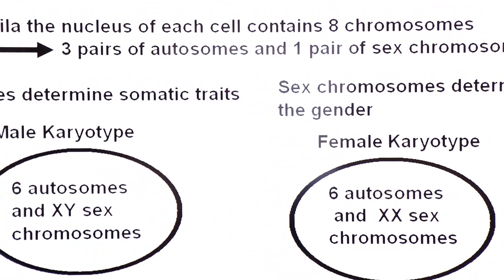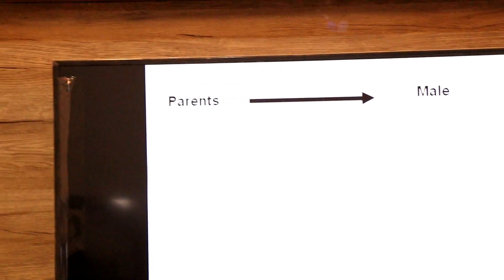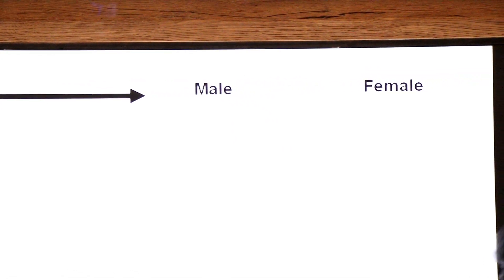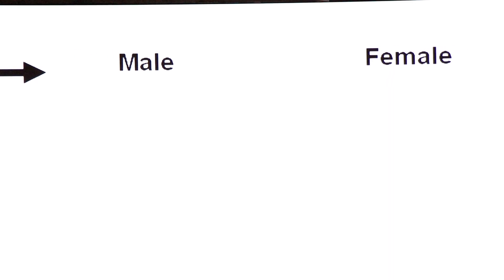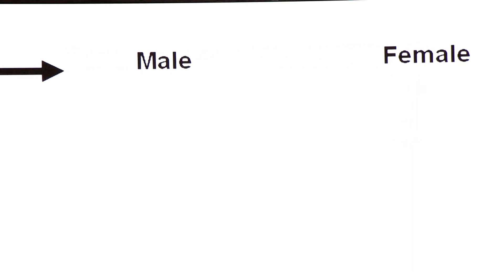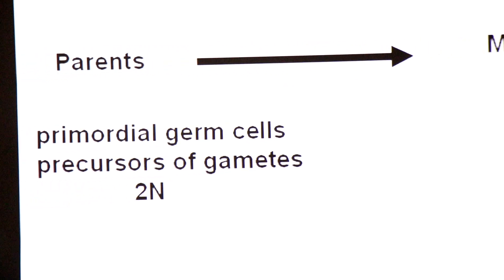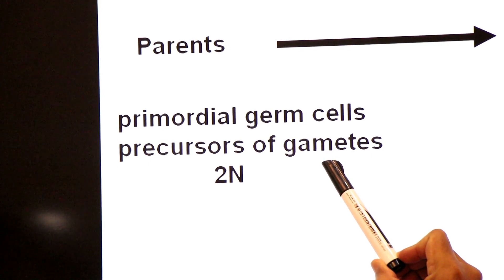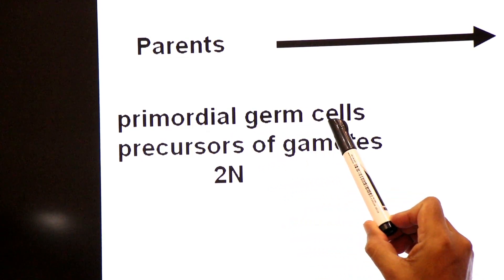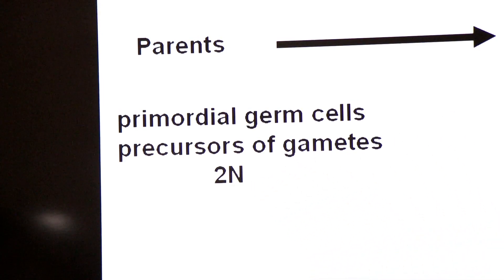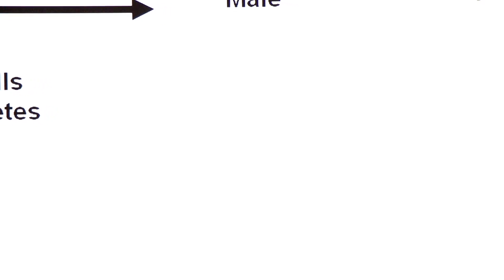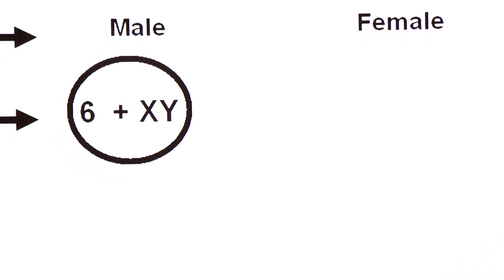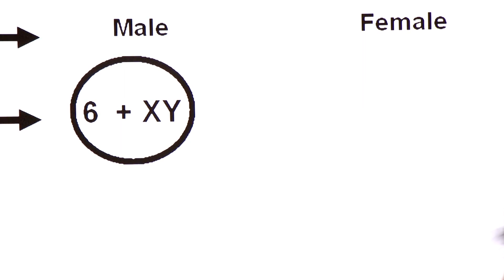Ab hum mechanism ki taraf aate hain — how sex is determined in Drosophila. The parents are male and female. Sperm aur egg jinse bante hain un cells ko hum padhate hain Primordial Germ Cells. Primordial Germ Cells are precursors of gametes. Jo cells hamesha diploid hote hain — in case of male, the Primordial Germ Cell is spermatogonium, jisse aage chalke sperms banenge.